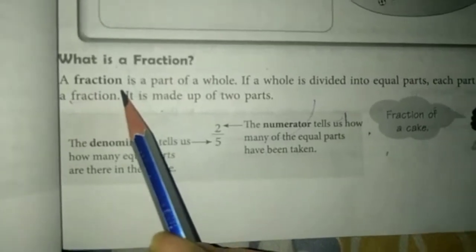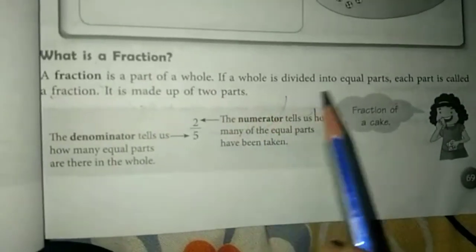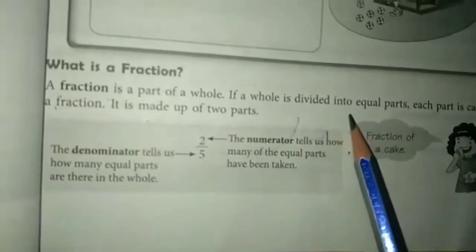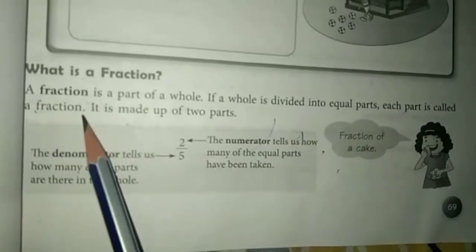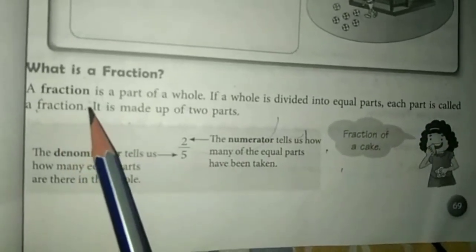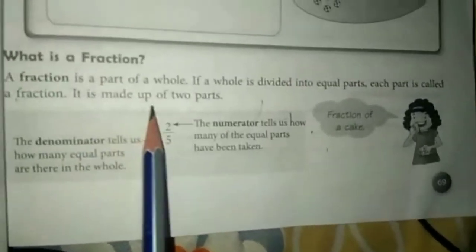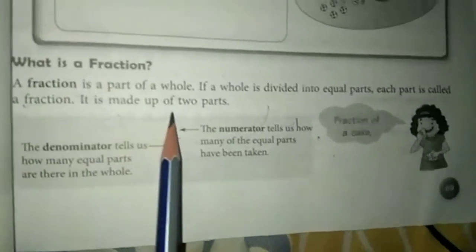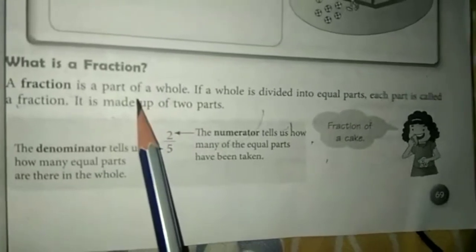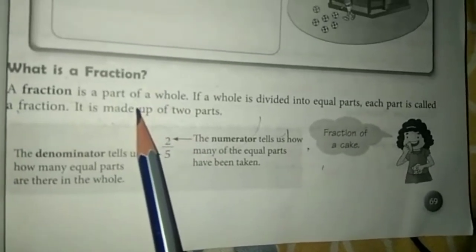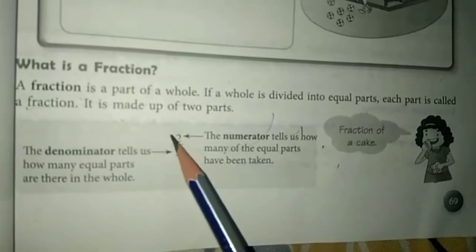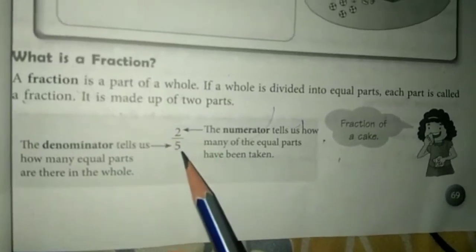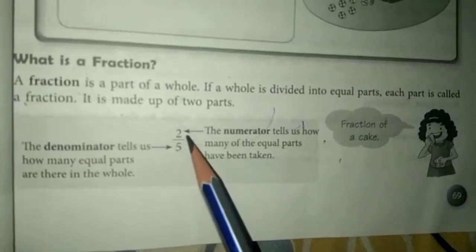If a whole is divided into equal parts, each part is called a fraction. Kisi bhi number ko agar hum equally do parts mein divide karte hain toh usko fraction kehte hain, like two upon five — this is a fraction.